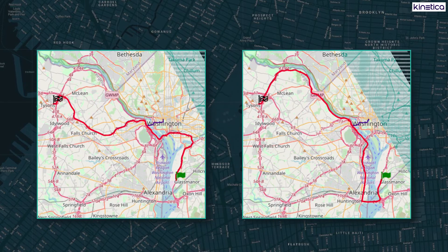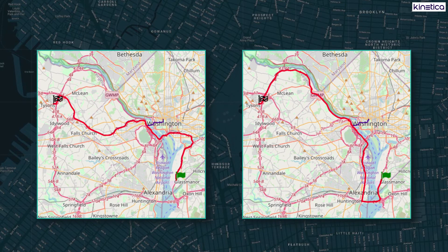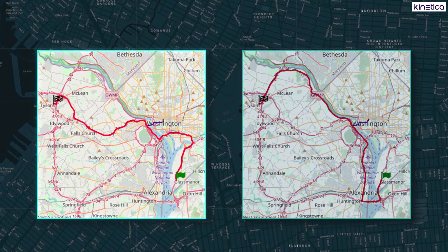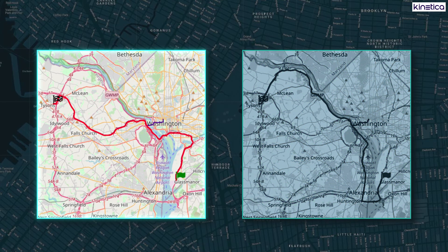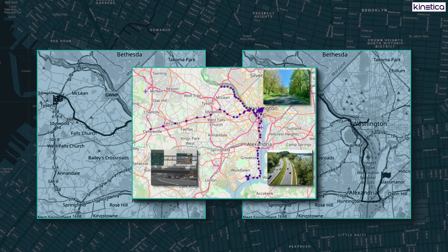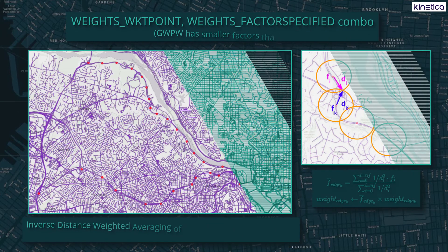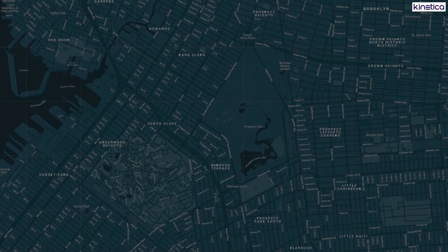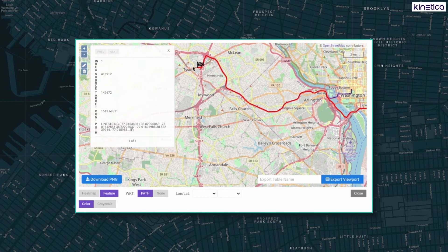Before getting into the optimization details, let's jump to results from our road trip data. Going from Washington DC to our headquarters in Virginia, we can choose the fastest route — the interstate on the left — or the riverside scenic route on the right. You can see a sample of images we captured and the beauty scores they yielded. Here is the full Washington DC metro area road network, with images shown along the two possible routes.